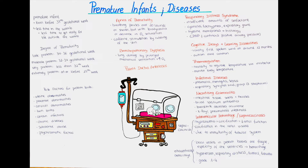Why does bronchopulmonary dysplasia develop? For the neonatal lung, very high oxygen percentages can create free radicals and superoxides, which can then damage the lung, especially when the neonate is very preterm. The lung can be very sensitive to high oxygen therapy. Normally it would still be in the womb, getting oxygenated blood not from its lungs but from the mother via the placenta, so the lungs are not yet ready to receive high concentrations of oxygen.